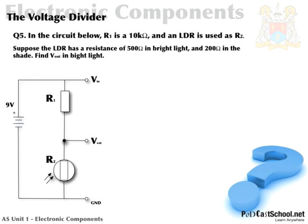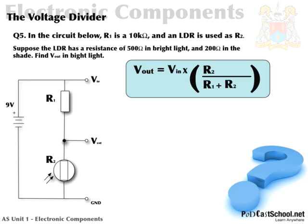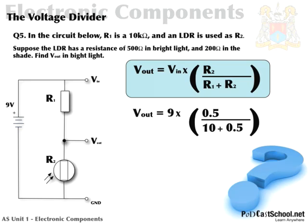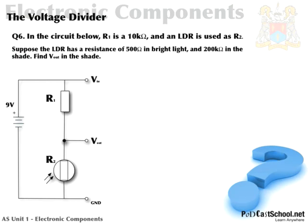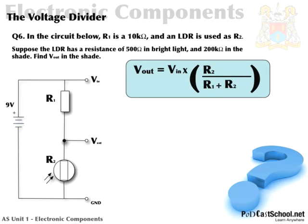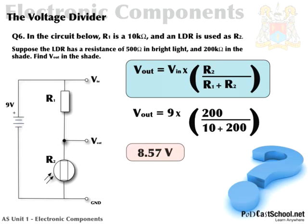Question: R1 is 10 kilohms and an LDR is used as R2. The LDR has a resistance of 500 ohms in bright light and 200 kilohms in the shade. Find V_out in bright light: put down the equation, plug in the values, and the answer is 0.43 volts. Find V_out in the shade: put down the equation, plug in the values, and the answer is 8.57 volts — because in the shade resistance is very high, pushing V_out close to V_in.